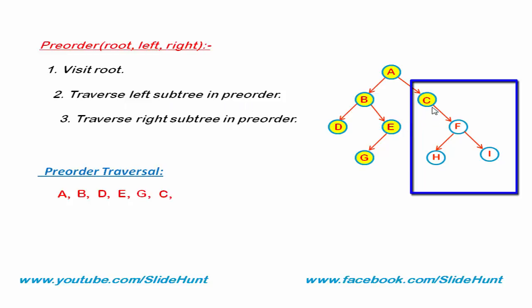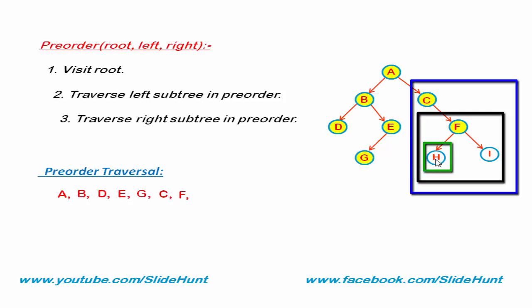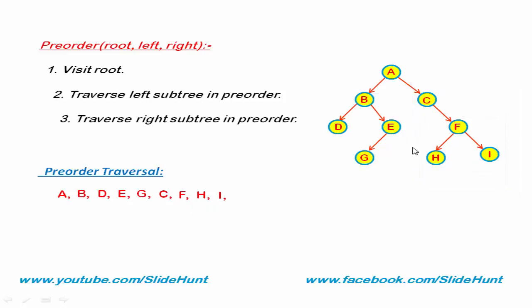Now traverse the left subtree in pre-order — C has no left subtree. Go to the next step: traverse the right subtree in pre-order. The right subtree of C is this one. Apply these three steps. Visit the root — the root of this subtree is F, so F is visited. Traverse the left subtree in pre-order — the left subtree of F is H. We traverse it using the pre-order algorithm. The first step is visit the root — H is visited. It has no left and right subtree, so go back to F. Now we traverse the right subtree of F — I is visited. This is the sequence after traversing this tree in pre-order.